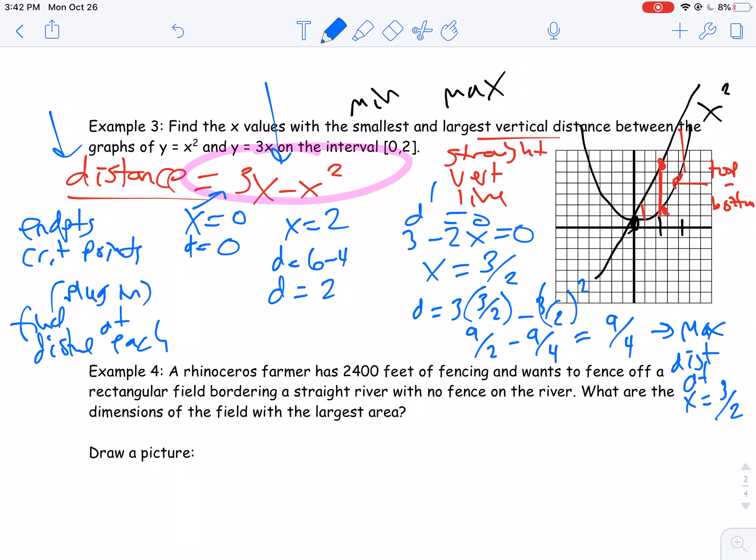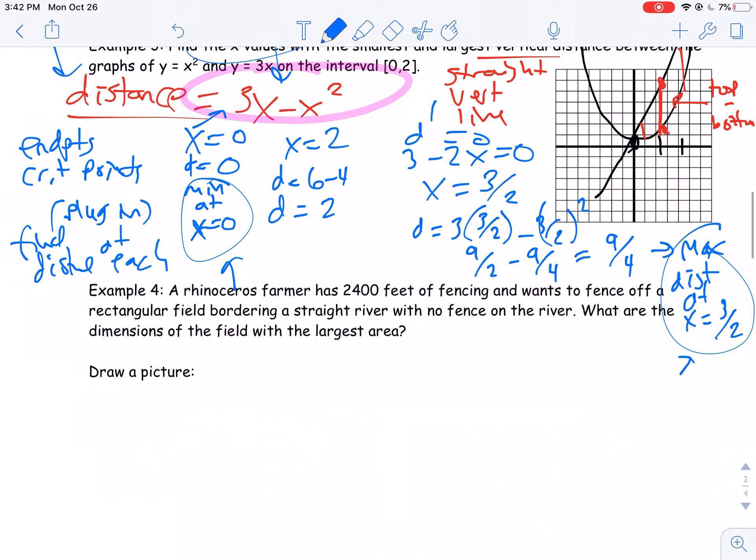So my maximum distance is at x equals 3 halves. And my minimum distance is at x equals 0. So that's how you want to answer these questions, right? I'm clearly saying, what is my min? What is my x? It asked for the x values, and I gave both of those values there. But this is what your work should look like. You say, okay, here are the critical points. Here are the endpoints. What are the values of d at each of those?